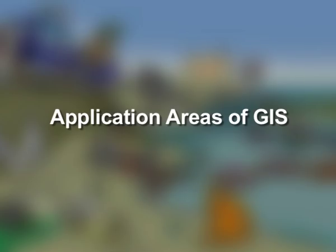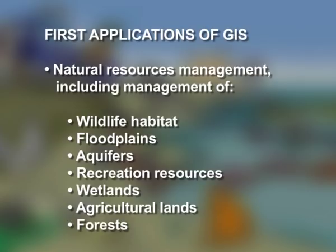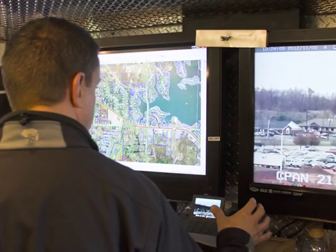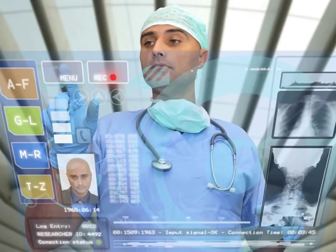GIS are now used extensively in government, business and research for a wide range of applications, including environmental resources analysis, land use planning, locational analysis, tax appraisal, real estate analysis and archaeological analysis. One of the first major areas of application was in natural resource management, including management of wildlife habitat, floodplains, aquifers, recreation resources, wetlands, agricultural lands and forests. Environmental health agencies at all levels of government, as well as universities, non-profit organizations, IT vendors and consultants, are increasingly using GIS technology to assess and protect the health of the populations they serve, understand the impacts of the environment on human health, and improve environmental health services delivery.